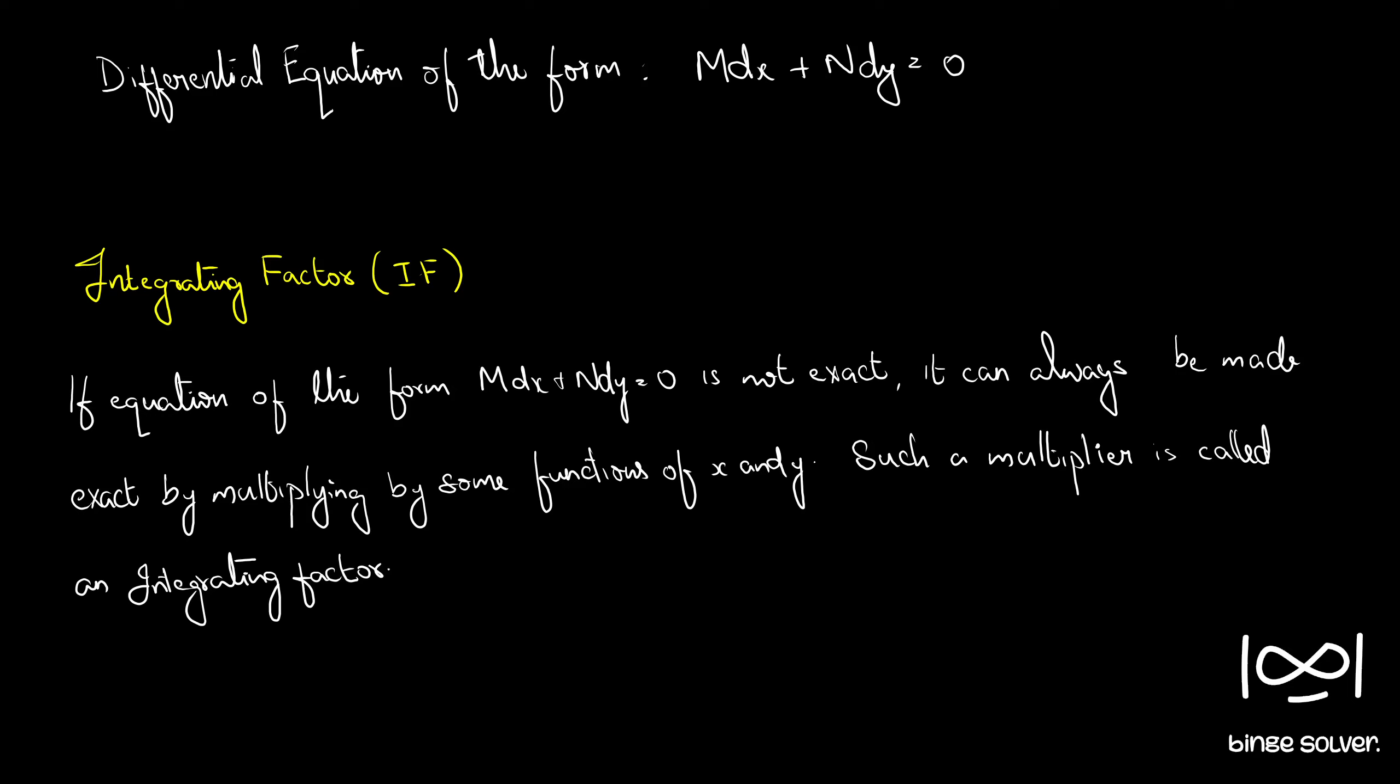If the equation of the form mdx plus ndy equal to 0 is not exact, it can always be made exact by multiplying by some functions of x and y. Such a multiplier is called an integrating factor.